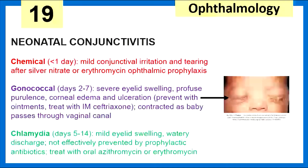Neonatal conjunctivitis has three types depending on timing. Within day one, it's chemical conjunctivitis — mild conjunctival irritation and tearing after silver nitrate or erythromycin ophthalmic prophylaxis given in the hospital. Between days two and seven, gonococcal conjunctivitis is the severe type we want to avoid — that's why we give babies erythromycin cream within an hour of delivery. Without it, the patient can develop severe eyelid swelling, profuse purulence, corneal edema, and ulceration. From days five to fourteen, chlamydial conjunctivitis presents with mild eyelid swelling and watery discharge; we treat with oral azithromycin or erythromycin.